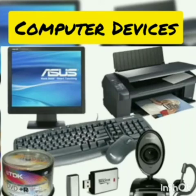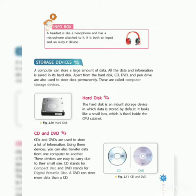Good morning children. In the previous videos we have already learned about input and output devices. Now the third device is storage device. A computer can store a large amount of data. All the data and information is stored in its hard disk. Apart from the hard disk, CD, DVD, and pen drive are also used to store data permanently. These are called computer storage devices.